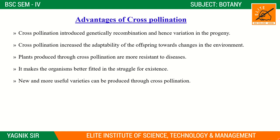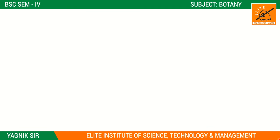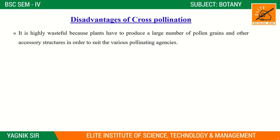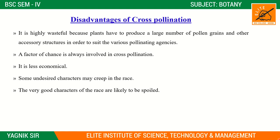Cross pollination makes organisms better fitted for the struggle for existence. New and more useful varieties can be produced. Defective characteristics of the race are replaced by better characters. Disadvantages: it is highly wasteful because plants must produce a large number of pollen grains. Other accessory structures and pollinator agents are needed. A factor of chance is always involved, and undesirable characteristics may creep into the progeny.